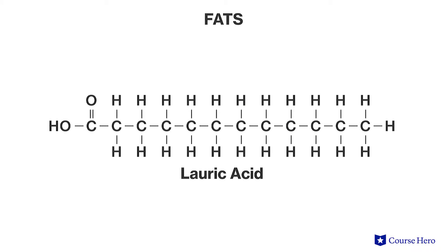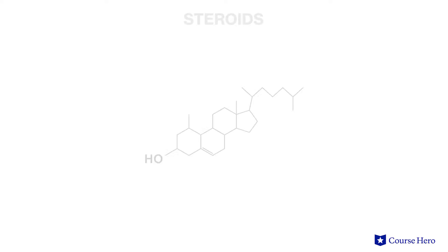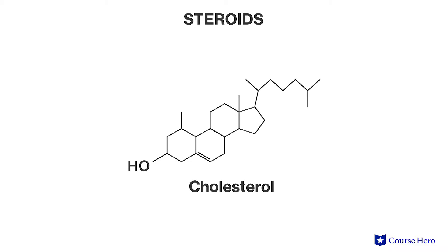Fats, steroids, phospholipids and waxes are all examples of lipids and they all play different functions. Lauric acid is an example of a fat found in coconut oil, which provides stored energy to cells. Cholesterol is an example of a steroid and is used by the human body to make hormones such as estrogen and testosterone, which regulate body functions such as sexual reproductive cycles and growth and development.